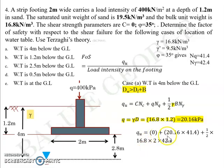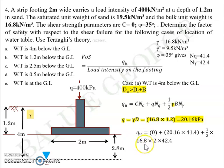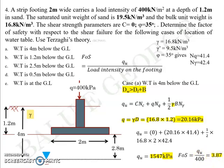Substituting into Terzaghi's equation: first term cancels (C = 0); second term = 20.16 × Nq (41.4); third term = ½ × 16.8 × 2 × Nγ (42.4). Solving gives qu = 1547 kPa, and the factor of safety = 1547 / 400 = 3.87.